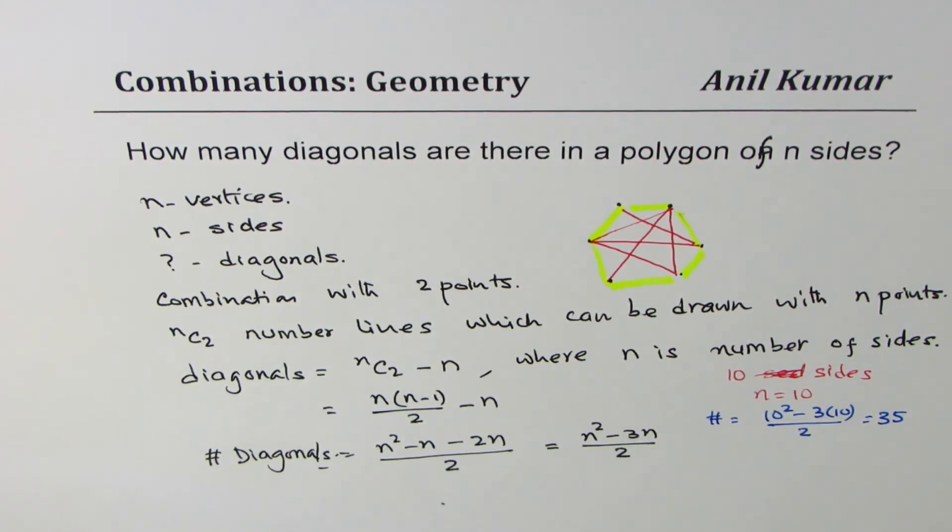So that is how you can derive a formula for number of diagonals given number of vertices or sides of the polygon. I'm Anil Kumar, and I hope that helps. Thank you, and all the best.